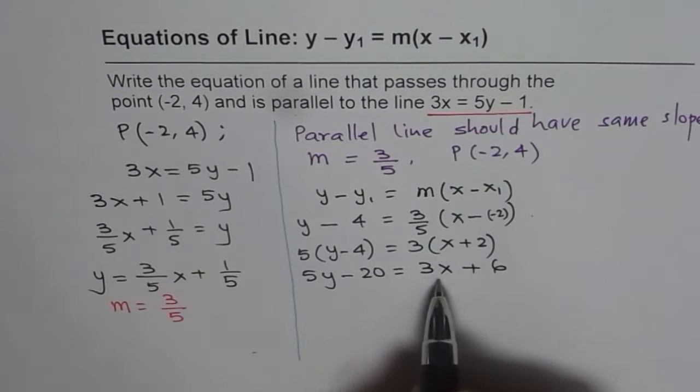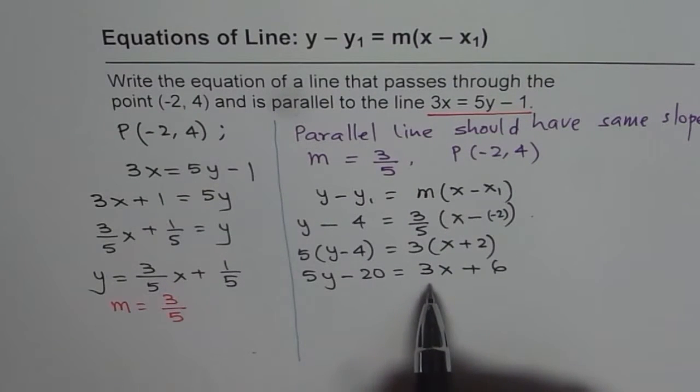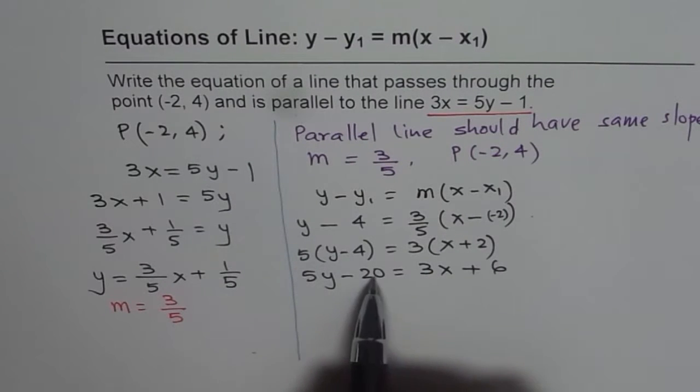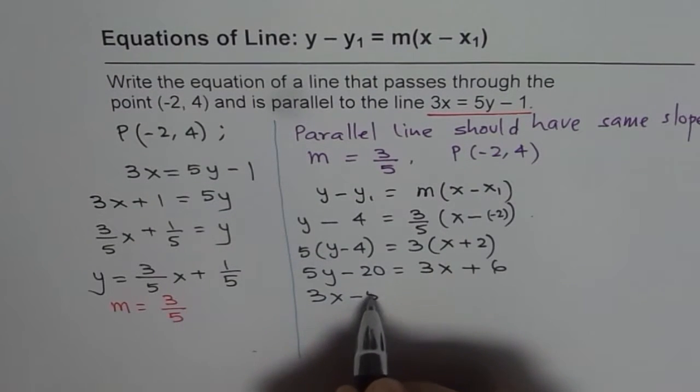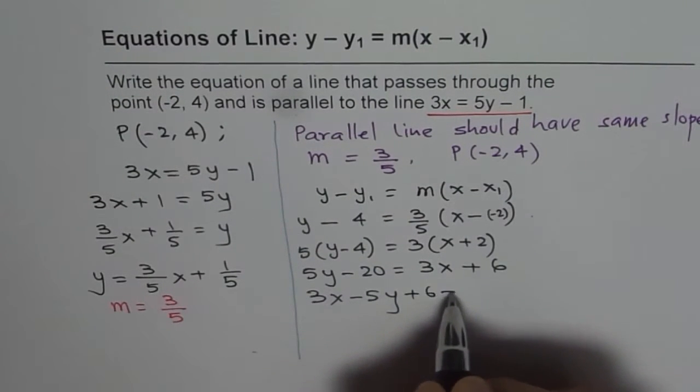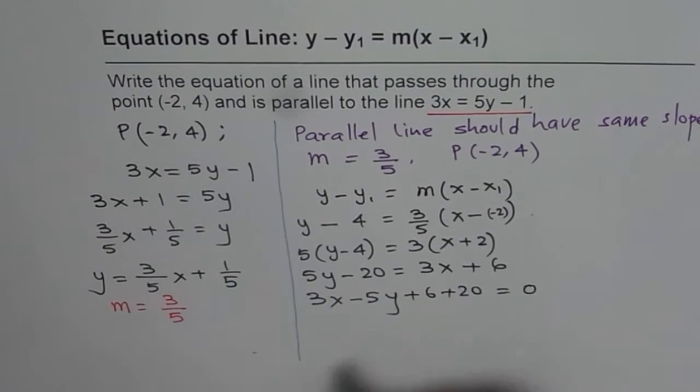Let's bring the terms together. Remember, whenever you're writing equation in standard form, coefficient of x should be positive. So we'll bring these to the right side. So we have 3x minus 5y plus 6 plus 20 equals to 0. Let's combine these terms.